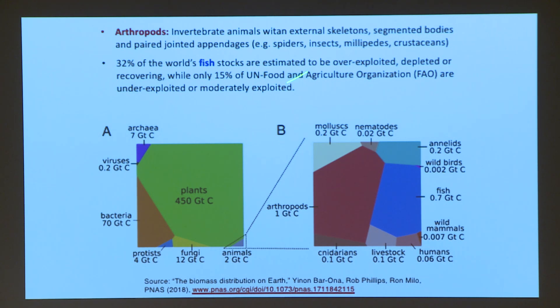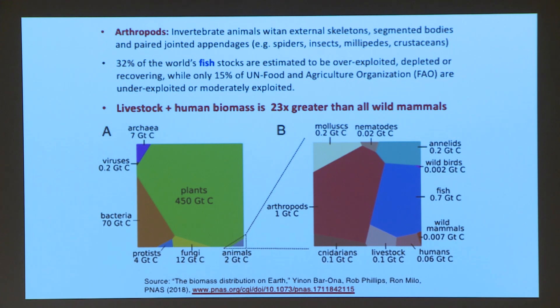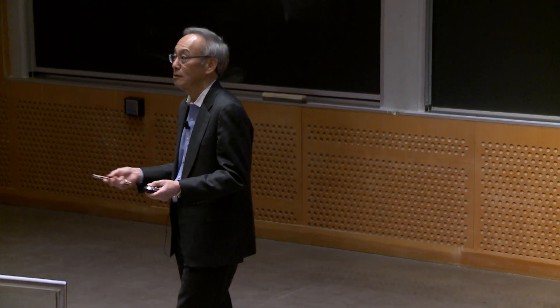30% of the world's fish stocks are estimated to be overexploited and most of the big fish are missing now. The livestock section — this is livestock, this is humans, the rest is wild mammals. The amount of biomass due to human intervention is 23 times that of all the rest of the mammals, to impress upon you the fact that we have really geoengineered the planet.